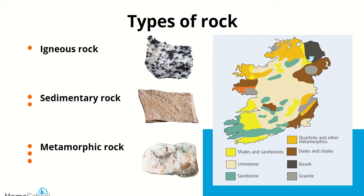Over the next couple of weeks we're going to look at types of rock, how rocks are formed, where you can find certain rocks, and how we use rocks. There are three main families of rock: igneous rock, sedimentary rock, and metamorphic rock. Today we're going to look briefly at examples of each rock type and how they're formed.